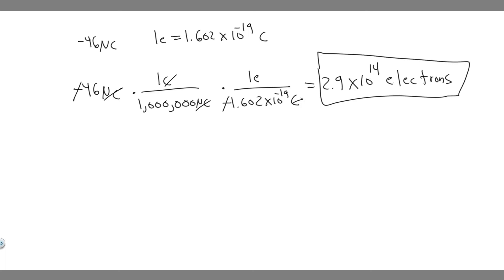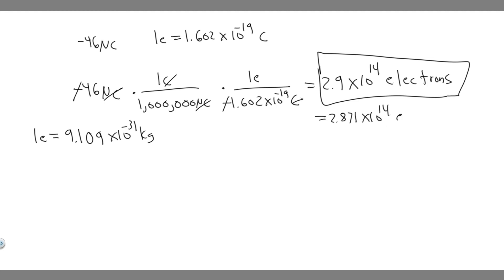So that's the answer to the first part — the number of excess electrons she gets. Now we want to find how much her mass increases. She's going to gain this many electrons, and we know the mass of an electron. The more exact answer was actually 2.871 times 10 to the 14 electrons — I had rounded it to 2.9 — so I'm going to use the more exact value of 2.871 times 10 to the 14 electrons when solving for the mass.